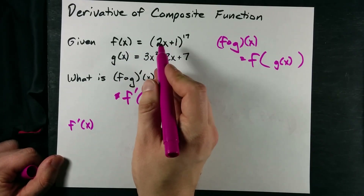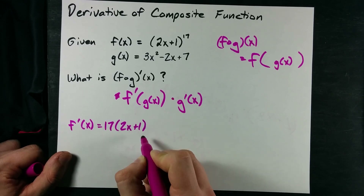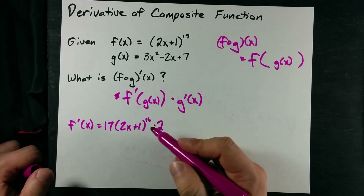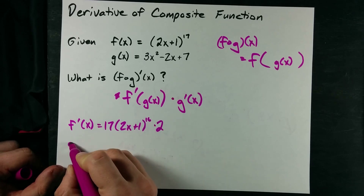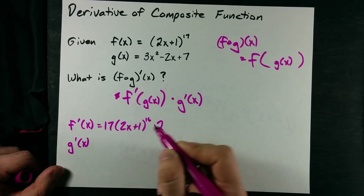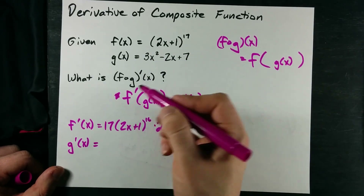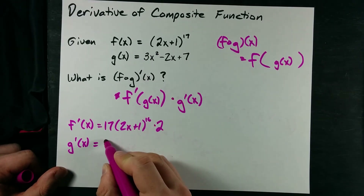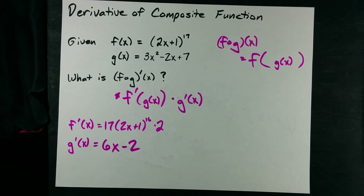Here's f. If I take the derivative of this, I bring the 17 down, I get 2x plus 1, I notch that exponent down by 1, and by chain rule I have to multiply by the derivative of what was on the inside. I'm going to take the derivative of g separately as well. Now g is just a polynomial. Bring that 2 down, notch the exponent down by 1, and minus 2x becomes minus 2.